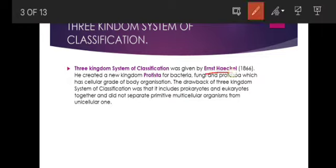Next came the three kingdom system of classification, proposed by Ernst Haeckel in 1866. He created a new kingdom called Protista for bacteria, fungi, and protozoa — organisms with a cellular grade of body organization. So Haeckel included one more kingdom, Kingdom Protista, into the living world for organisms with a cellular level of organization.